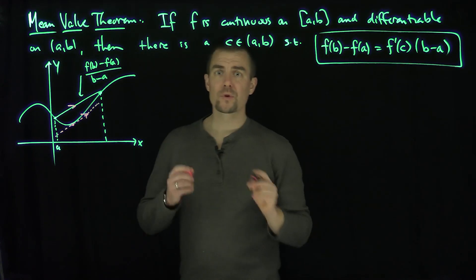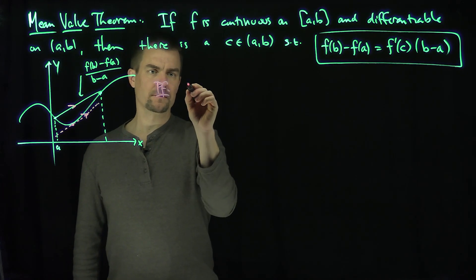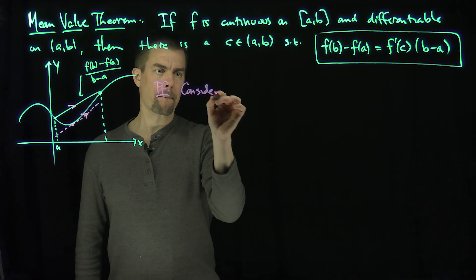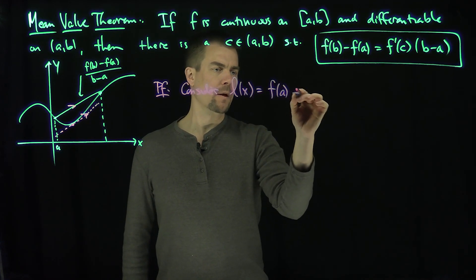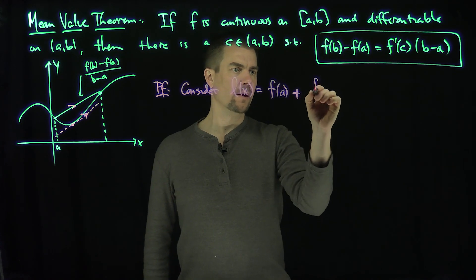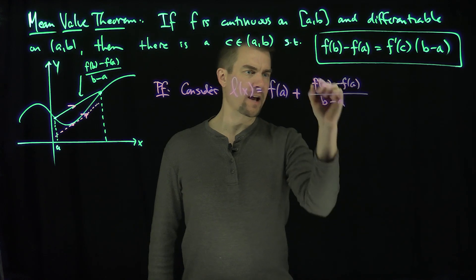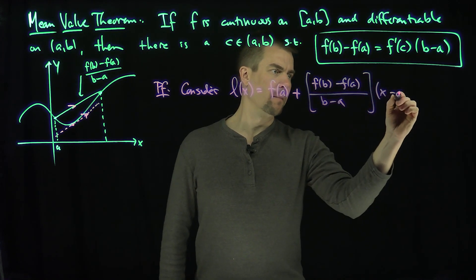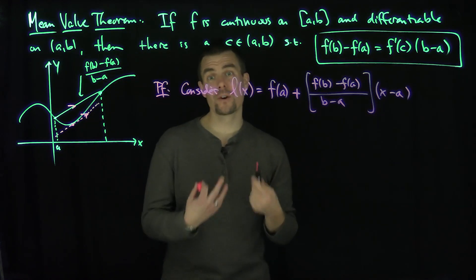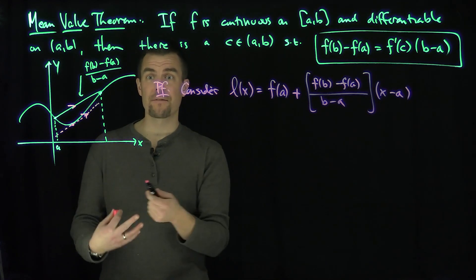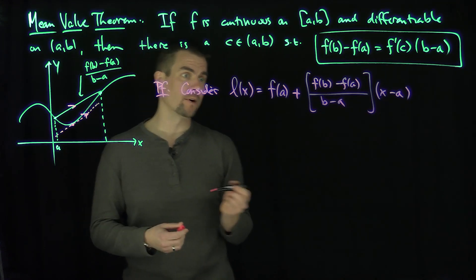Let's prove the Mean Value Theorem. What we're going to do is introduce, here's a proof: let me consider l of x, which is f of a plus f of b minus f of a over b minus a — that's the slope of the secant line — times x minus a. Now what is this function l of x? This function l of x is the equation of the secant line between a comma f of a and b comma f of b. Let's check.